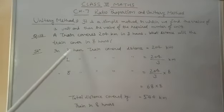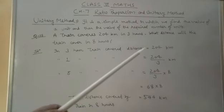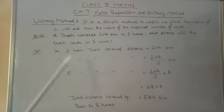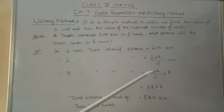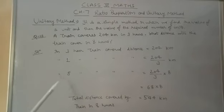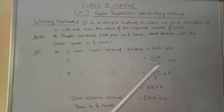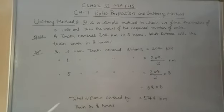So, according to the question, in 3 hours, train covers distance of 204 kilometers. In 1 hour, train covers distance of 204 divided by 3 kilometers. In 8 hours, train covers distance of 204 divided by 3 multiplied by 8.